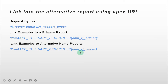Hello everyone. In this video I'm going to talk about how to link to the alternative report using APEX URL. First, let's look at how to write the request syntax: RR region status ID outline report alias.